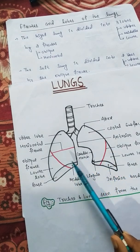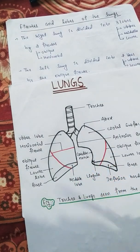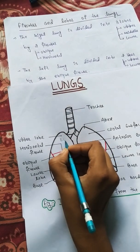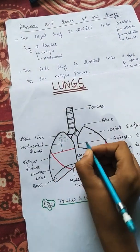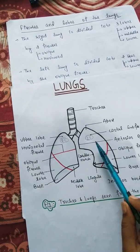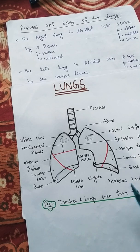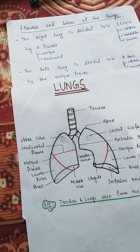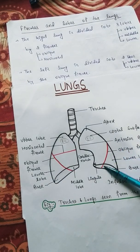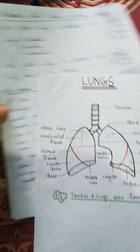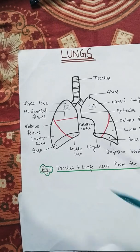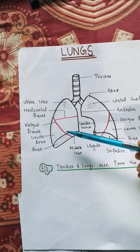The oblique fissure is present in both lungs — right as well as left. The left lung is divided into two lobes, upper lobe and lower lobe, by one oblique fissure. The oblique fissure cuts through the whole thickness of the lung except at the hilum.